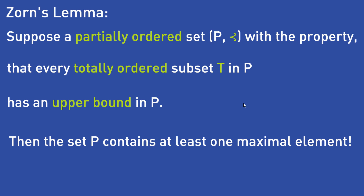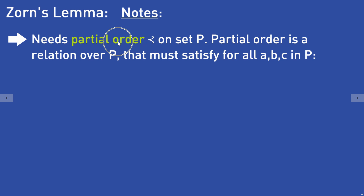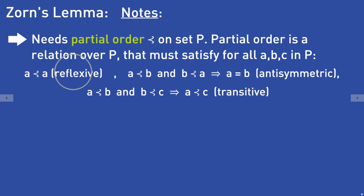How do you use Zorn's Lemma? First of all you need a partial order — denoted ≤ — on the set P. A partial order is a relation over P that must satisfy for all a, b, c in P: it is reflexive, meaning a is related to a; it is antisymmetric, meaning if a is related to b and b is related to a then a equals b; and it is transitive, meaning if a is related to b and b is related to c then a is related to c.